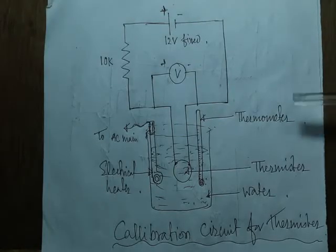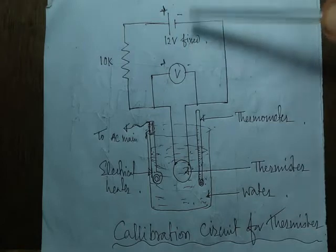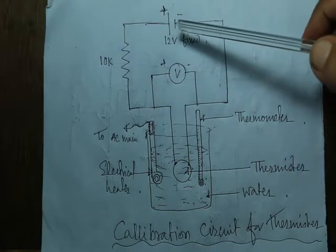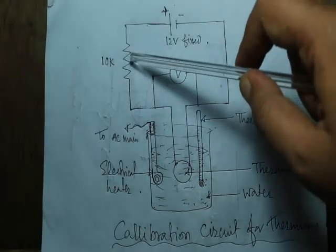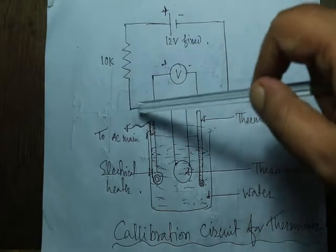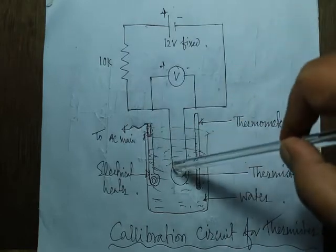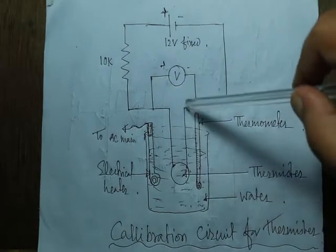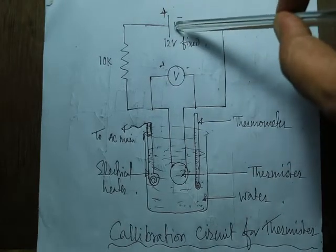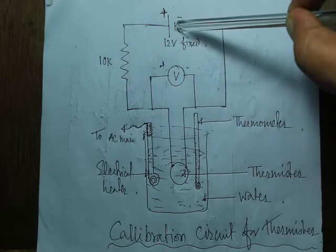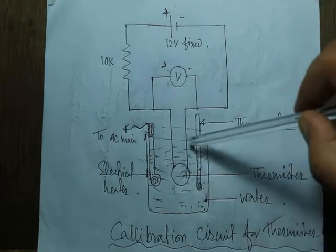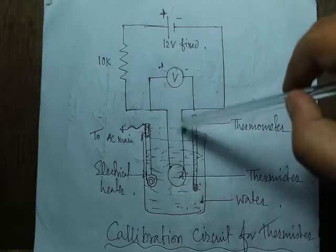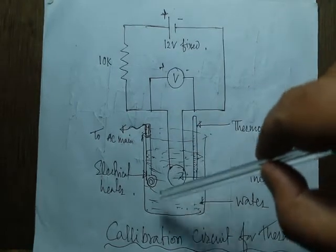This is a circuit for calibrating a thermistor. It is a simple circuit: we took a fixed 12-volt power supply, connected it to a 10 kilo-ohm resistance, and then one side of that resistance goes to a thermistor. The other side of the thermistor connects to the negative terminal of the power supply, and we also attach a voltmeter in parallel with the thermistor to measure the voltage drop across it.